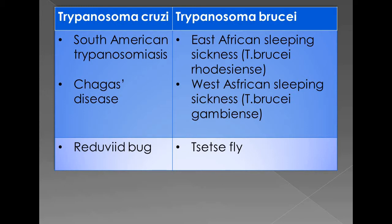Trypanosoma has two species: Trypanosoma cruzi and Trypanosoma brucei. The disease caused by Trypanosoma cruzi is called Chagas disease or South American trypanosomiasis, which is common in South America. Trypanosoma brucei causes East African sleeping sickness and West African sleeping sickness. Trypanosoma cruzi is transmitted by the bite of the reduviid bug, specifically the triatomine bug. Trypanosoma brucei is transmitted by the bite of the tsetse fly.